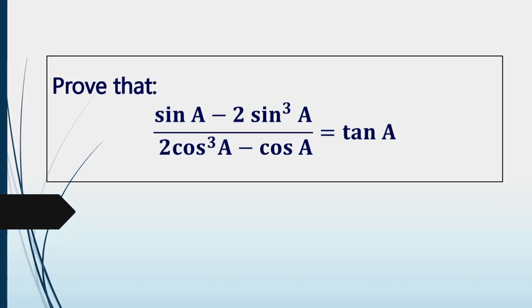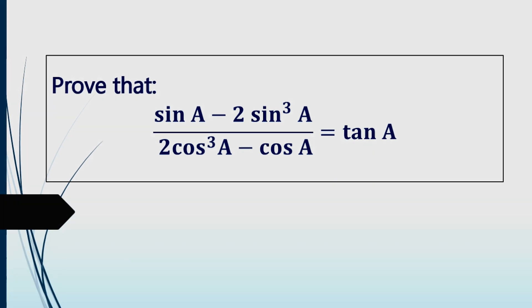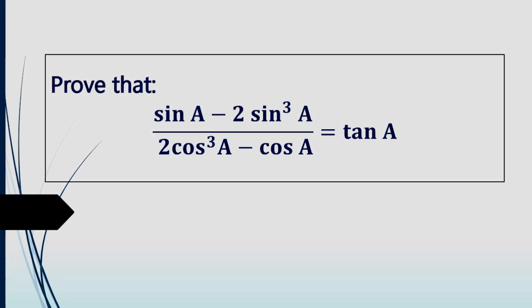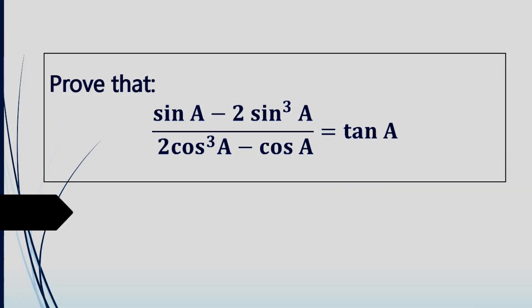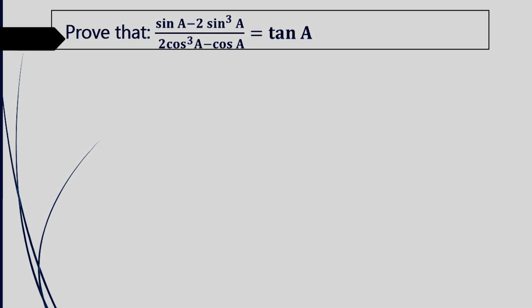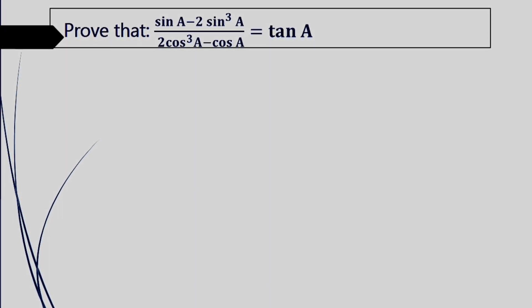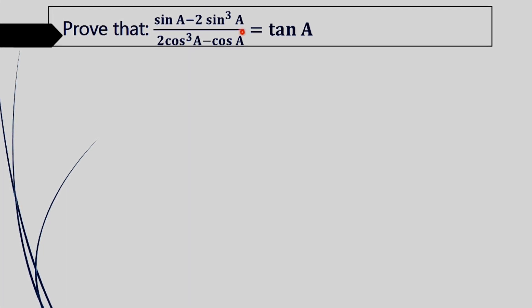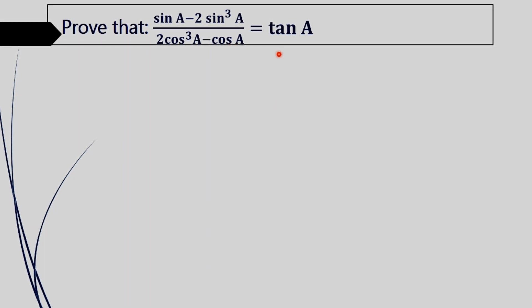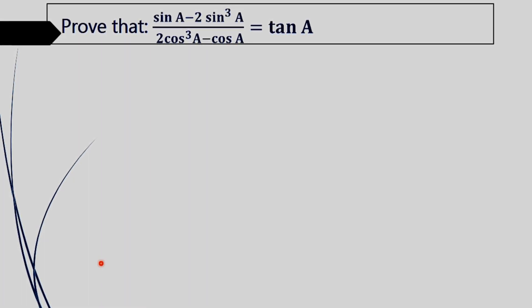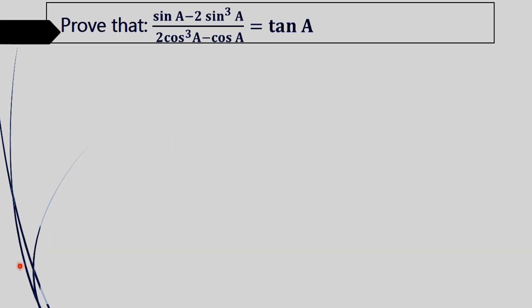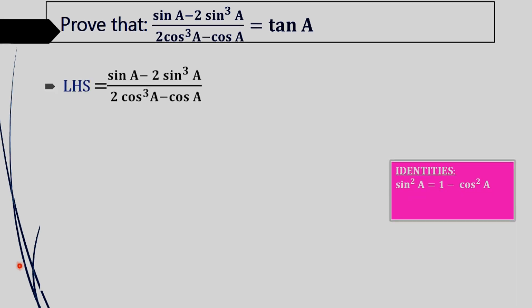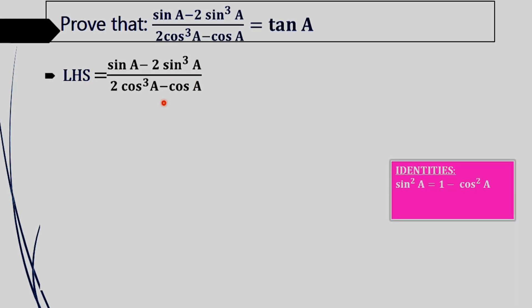Trigonometry. Prove that sin a minus 2 sin cube a, whole divided by 2 cos cube a minus cos a, equals tan a. So we have to prove sin a minus 2 sin cube a, whole divided by 2 cos cube a minus cos a, equal to tan a. For proving that, take LHS of this equation, that is sin a minus 2 sin cube a, whole divided by 2 cos cube a minus cos a, which is a very easy problem.